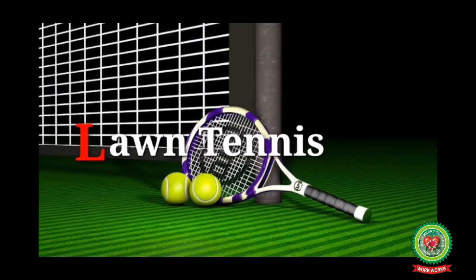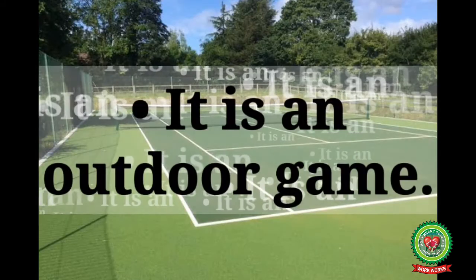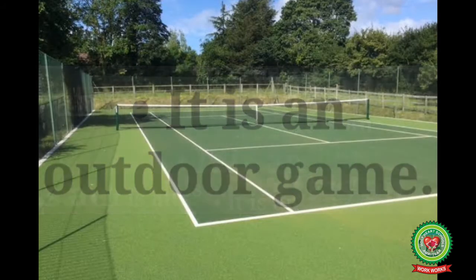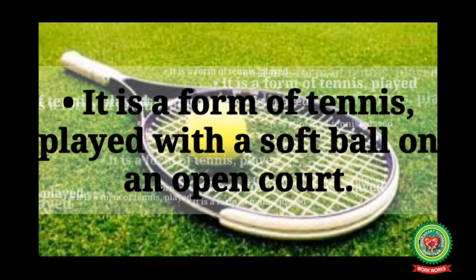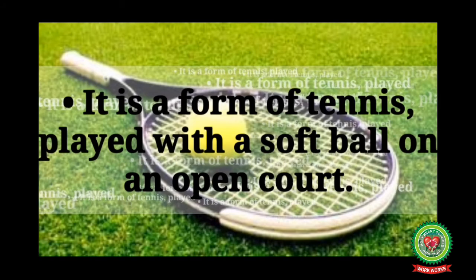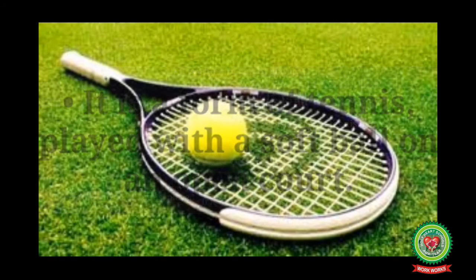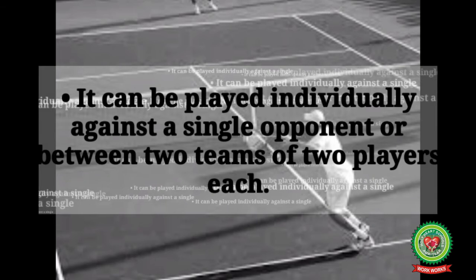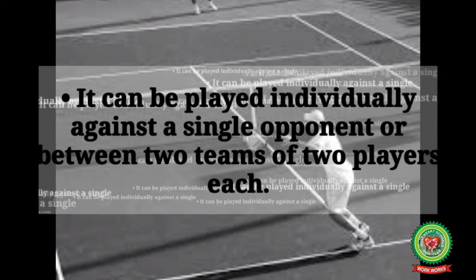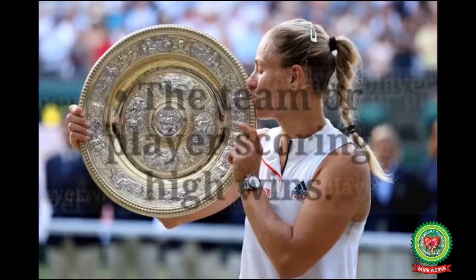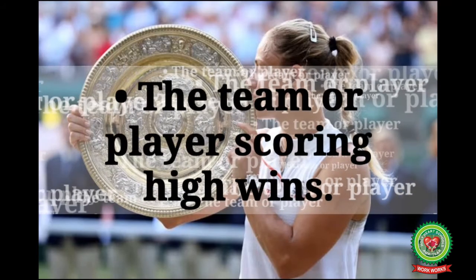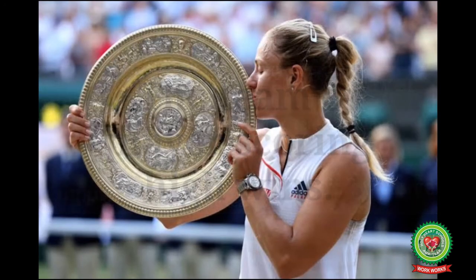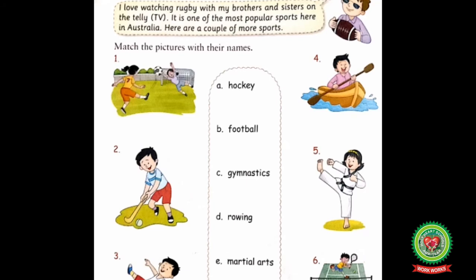The next sport is lawn tennis. It is an outdoor game — a form of tennis played with a soft ball on an open court. It can be played individually against a single opponent, or between two teams of two players each. The team or player scoring the highest wins.